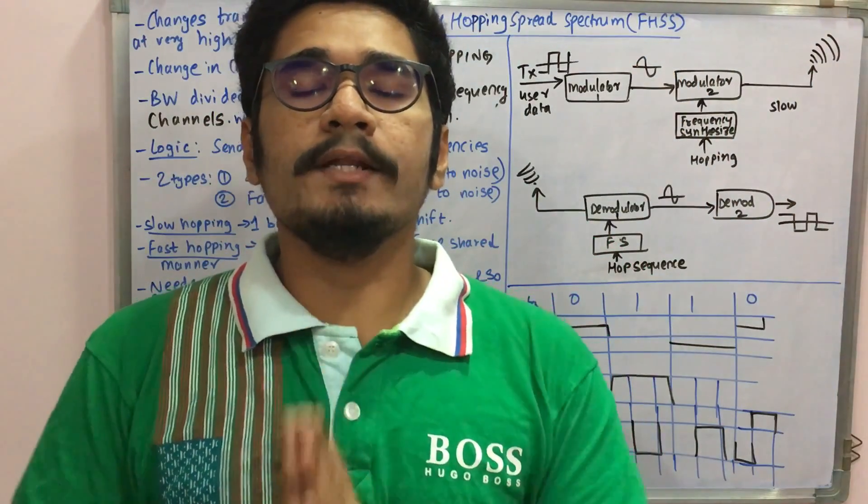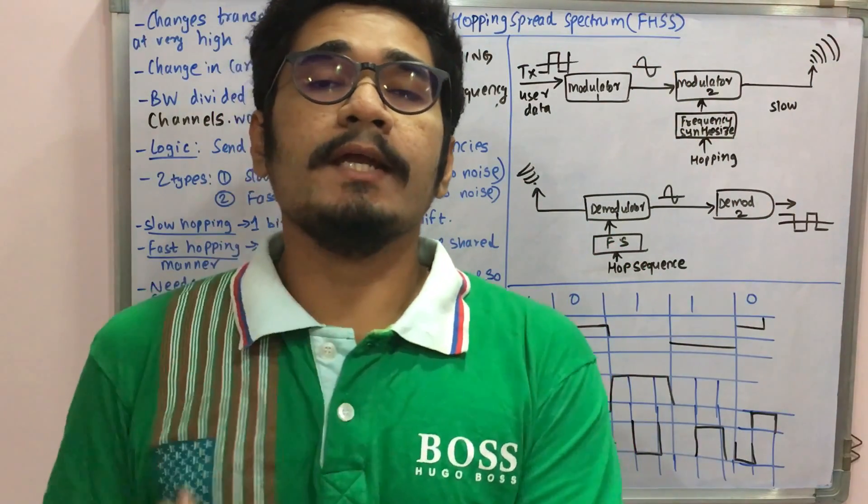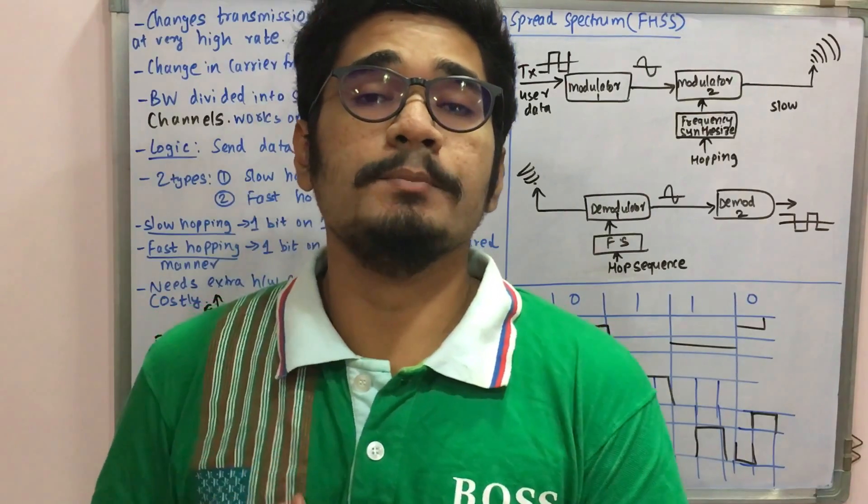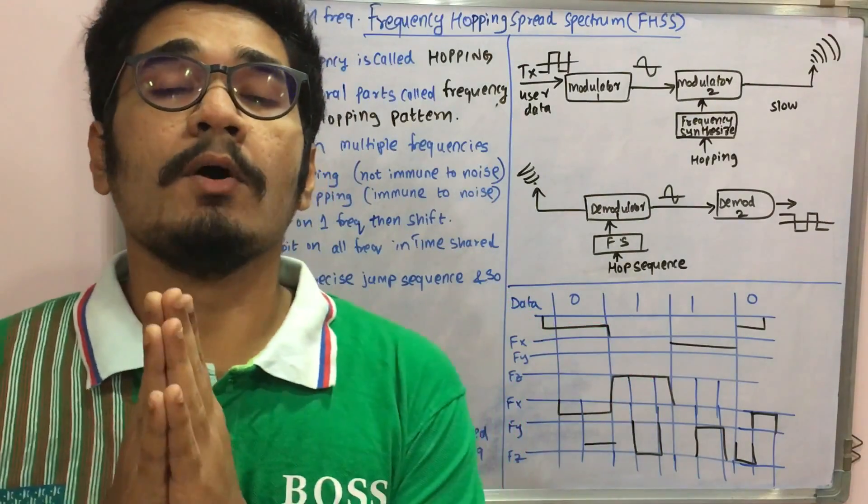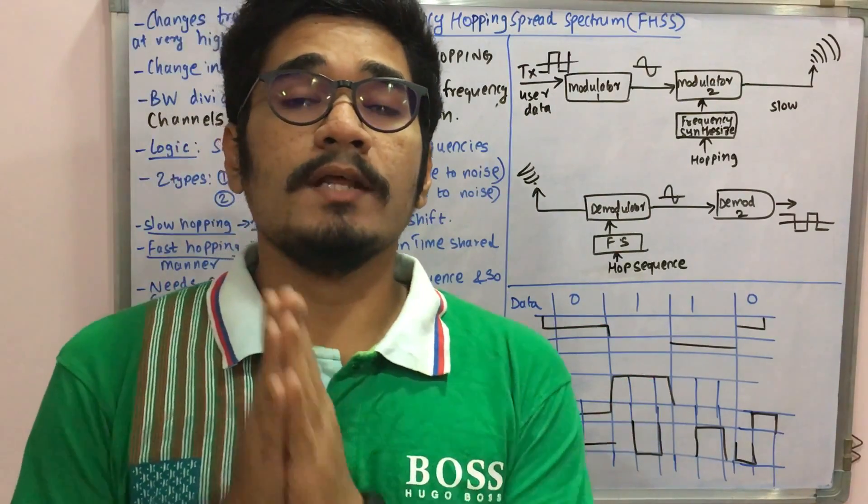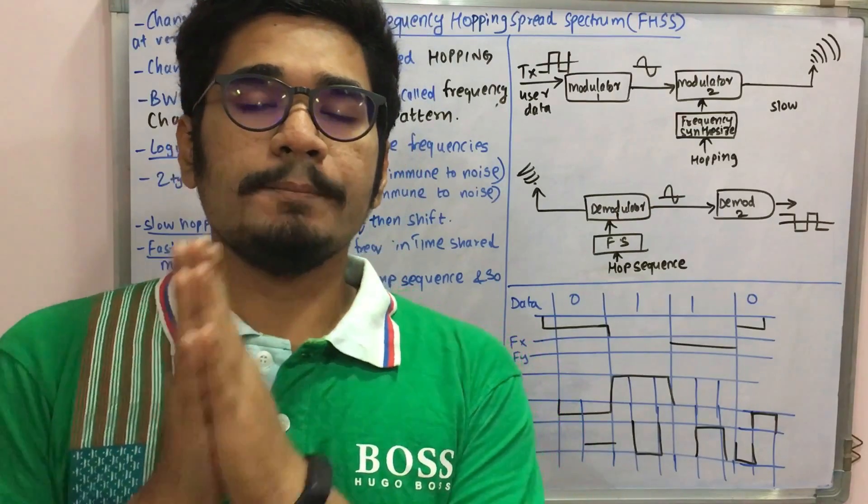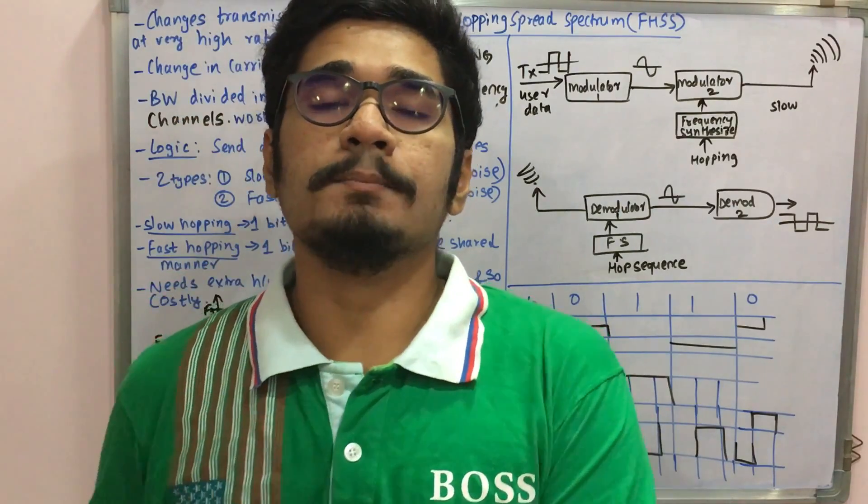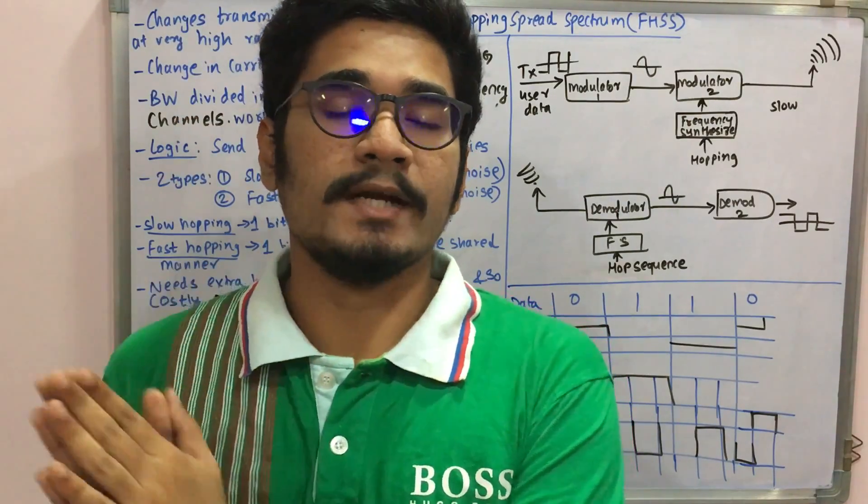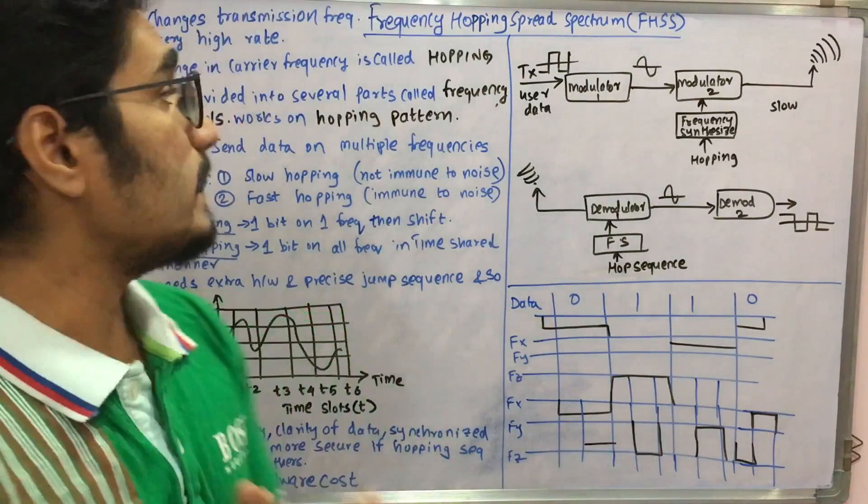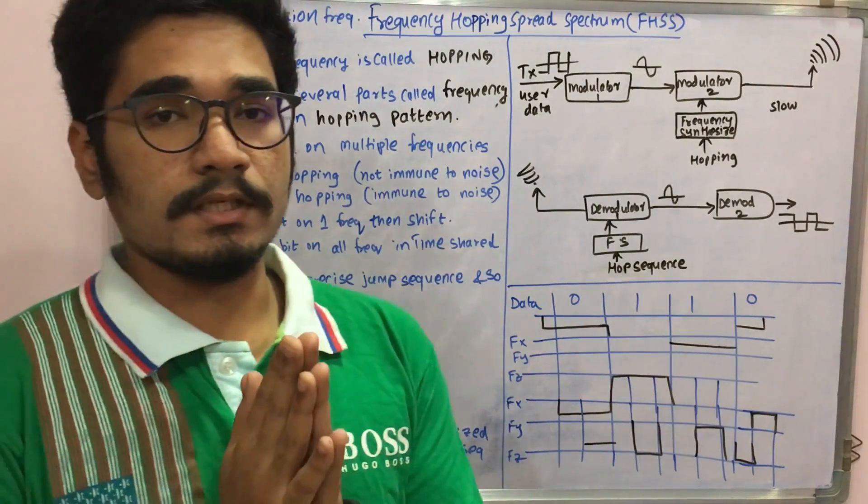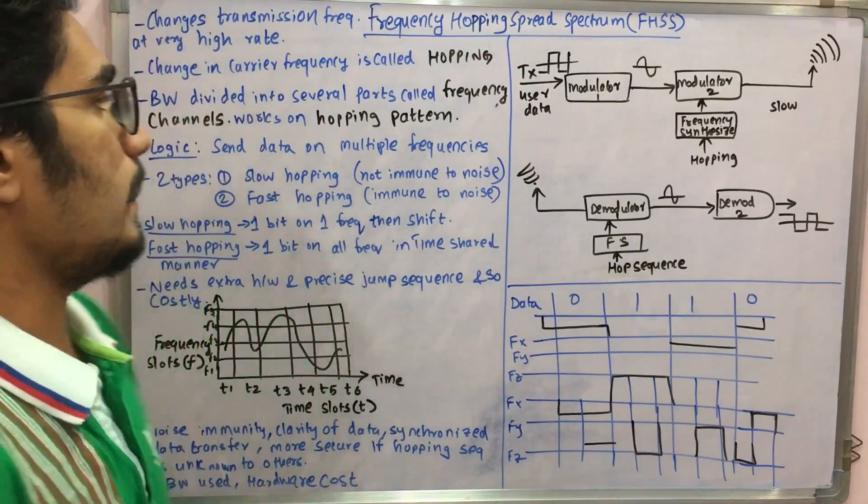Hey guys, welcome back to my channel. Today in this video we'll be seeing the second type of spread spectrum distribution, the Frequency Hopping Spread Spectrum, called FHSS. In the previous video we saw the DSSS, the Direct Sequence Spread Spectrum. In this video let's see what FHSS does and how it works.